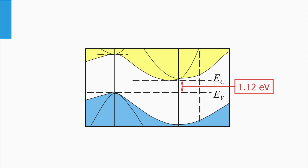Crystalline silicon has a direct transition as well. However, this transition has an energy of 3.4 eV, which equals a wavelength of 364 nm. This is in the blue spectral part.